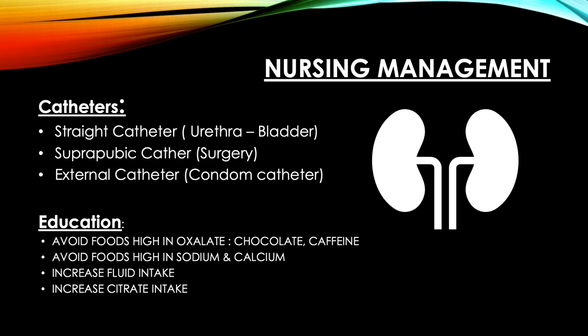Catheters may be used in the case of kidney stones. Straight catheters are inserted through the urethra to the bladder and used intermittently — using them for long periods can cause a CAUTI. Suprapubic catheters are surgically placed through the skin to the bladder and are used for individuals with a blocked urethra. External condom catheters are for males who are involuntarily losing urine.